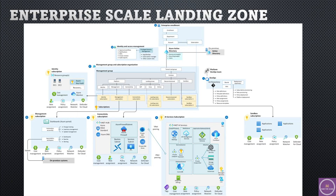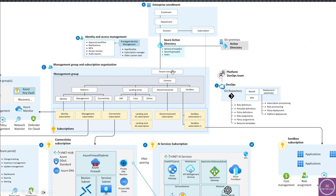Now I'll provide information about the enterprise scale landing zone — I've already created a video on this topic whose link you can find in the description, but for this video I'll provide a quick overview. Whether you are on pay-as-you-go, an enterprise agreement with Microsoft, or a cloud service provider with a Microsoft partner, all subscriptions you deploy go to the tenant root group. In the enterprise scale landing zone, we deploy a management group structure — here the example is taken as Contoso but you can use your organization's name. It's like a folder structure under which you deploy different subscriptions, then resource groups, and then resources within those subscriptions.